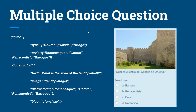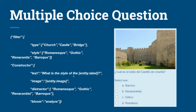Then we have multiple choice questions. This example is applied to all churches, castles, and bridges whose architectural style is either Romanesque, Gothic, Renaissance, or Baroque. The constructor asks for the style of the building — in this case a castle — along with its image. The distractors are drawn from a list, or in other cases obtained from the parameters of other elements in the dataset.